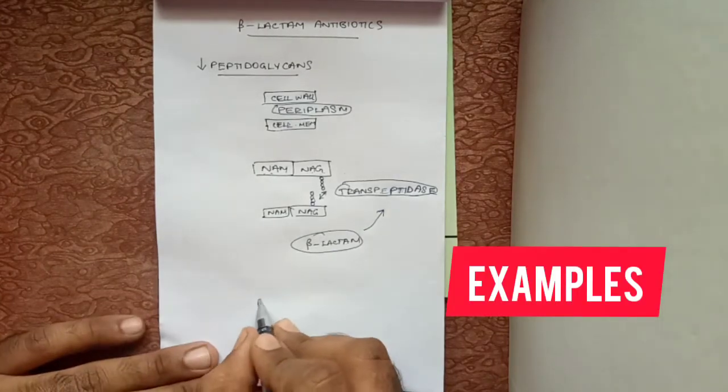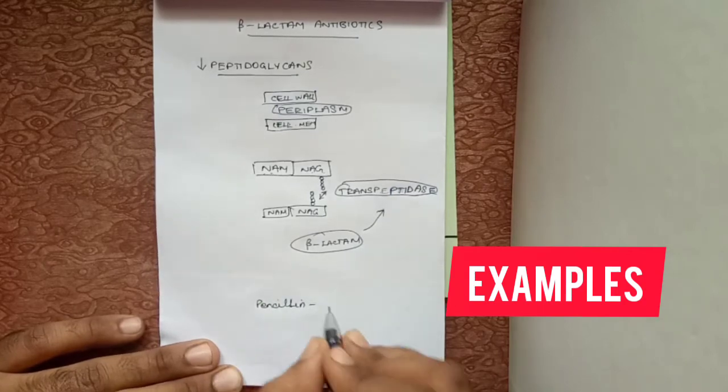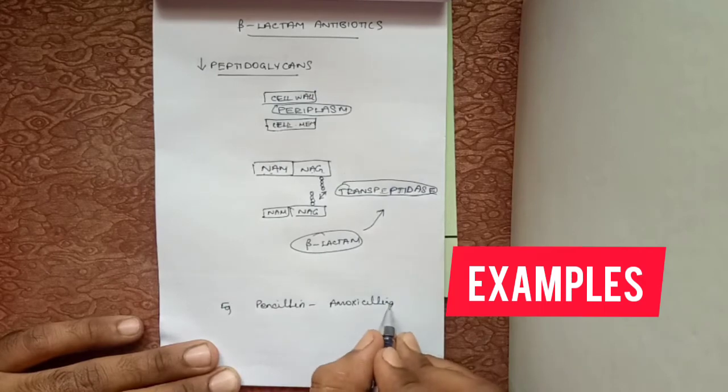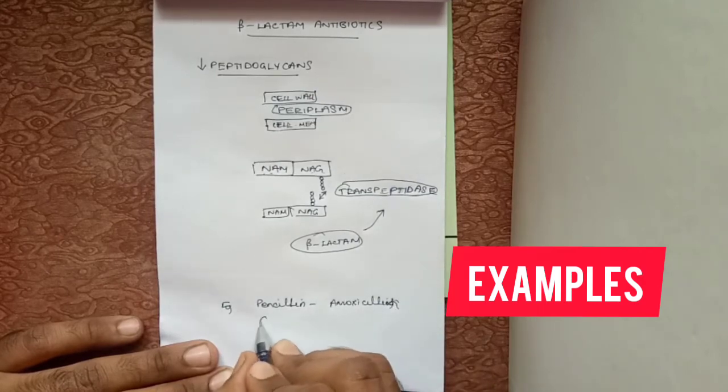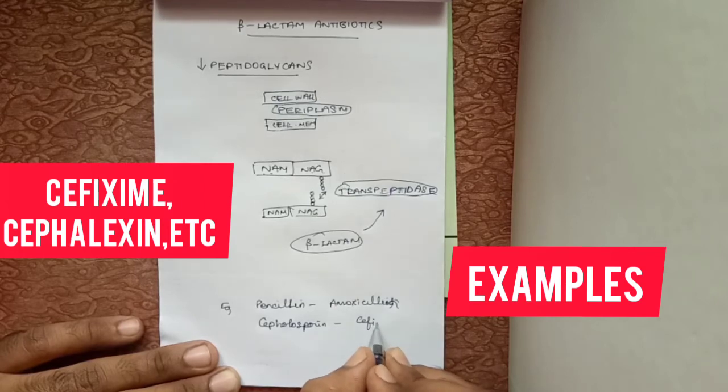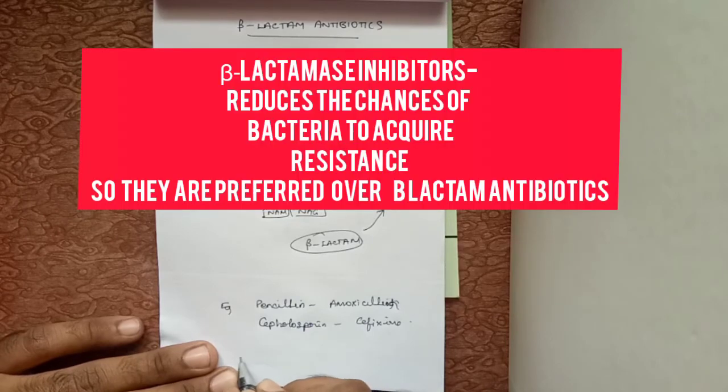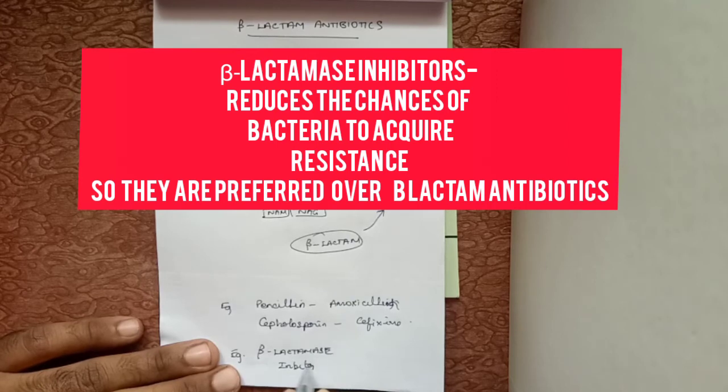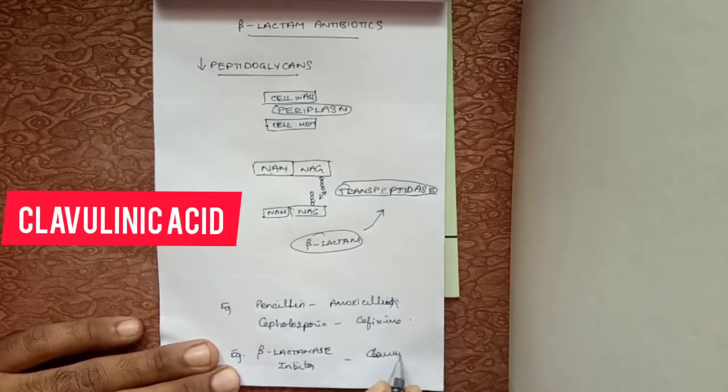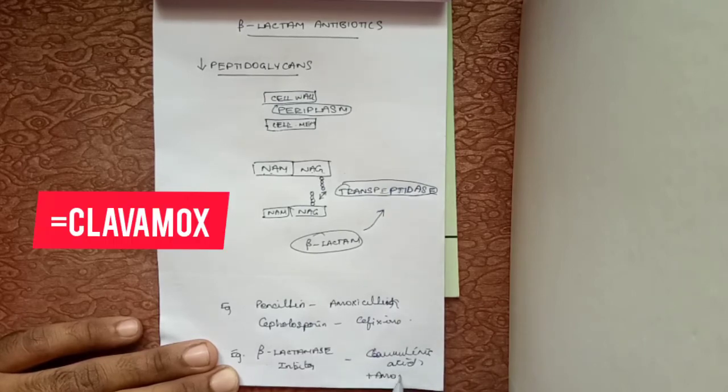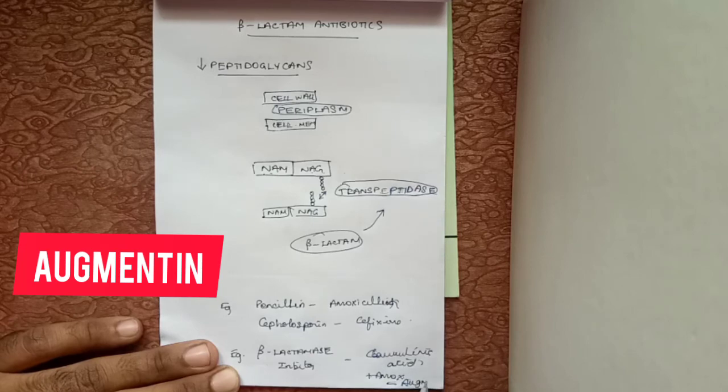An example of penicillin used in the clinic is amoxicillin. An example of beta-lactamase inhibitors is clavulanic acid, which is often mixed with amoxicillin and is used in the trade name called Augmentin.